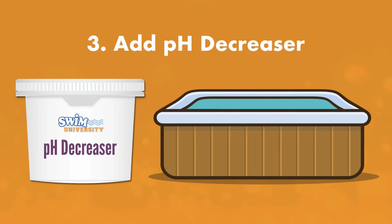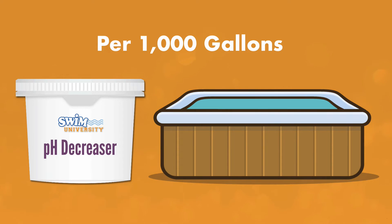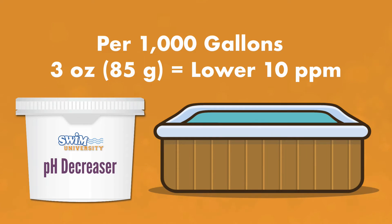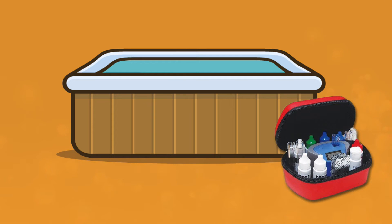If it's high, add pH decreaser. If your hot tub holds a thousand gallons of water, use about three ounces or 85 grams to lower the alkalinity by 10 parts per million. Sprinkle the powder around the surface of the hot tub while it's running to help mix it in — this is called broadcasting. Then retest the water. After 24 hours, test the water again and adjust as needed.